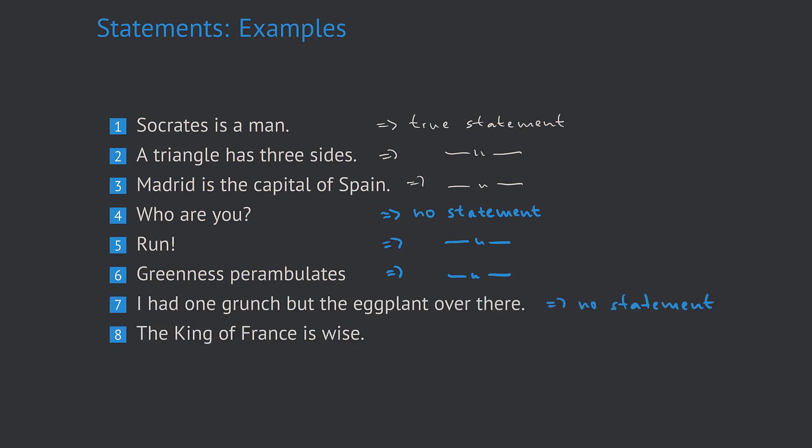Now what about number eight? 'The king of France is wise.' That indeed looks very much like a statement, because we could argue, well, the king of France is either wise or not wise. Depending on that, the statement is true or not true. However, the attribute of being wise is open to much interpretation. Depending on how an observer defines to be wise, that can be true for one observer and false for the other one. So again, that is no statement.